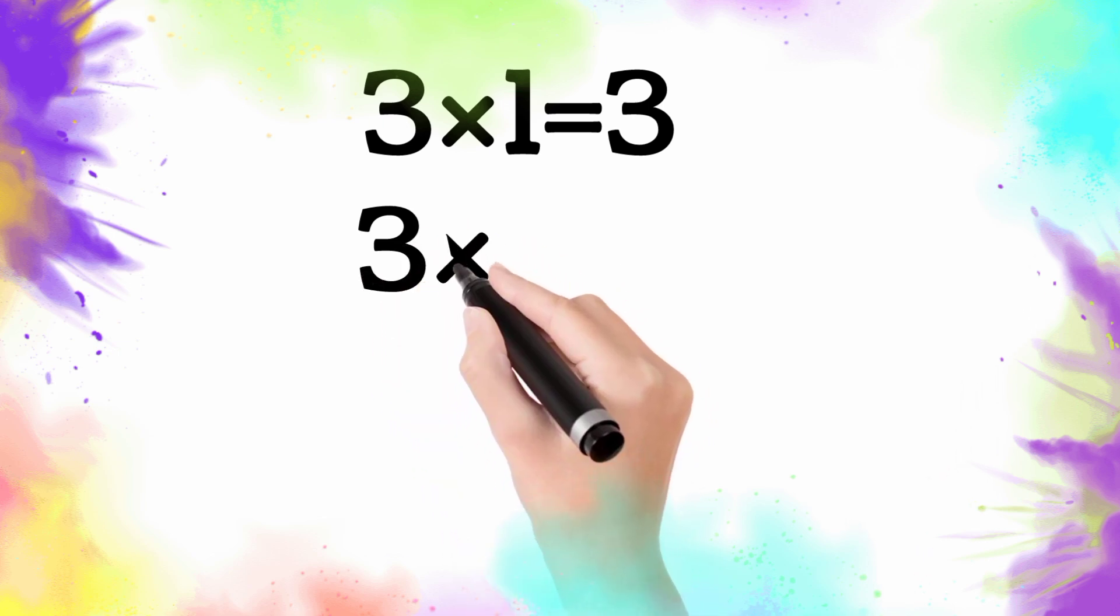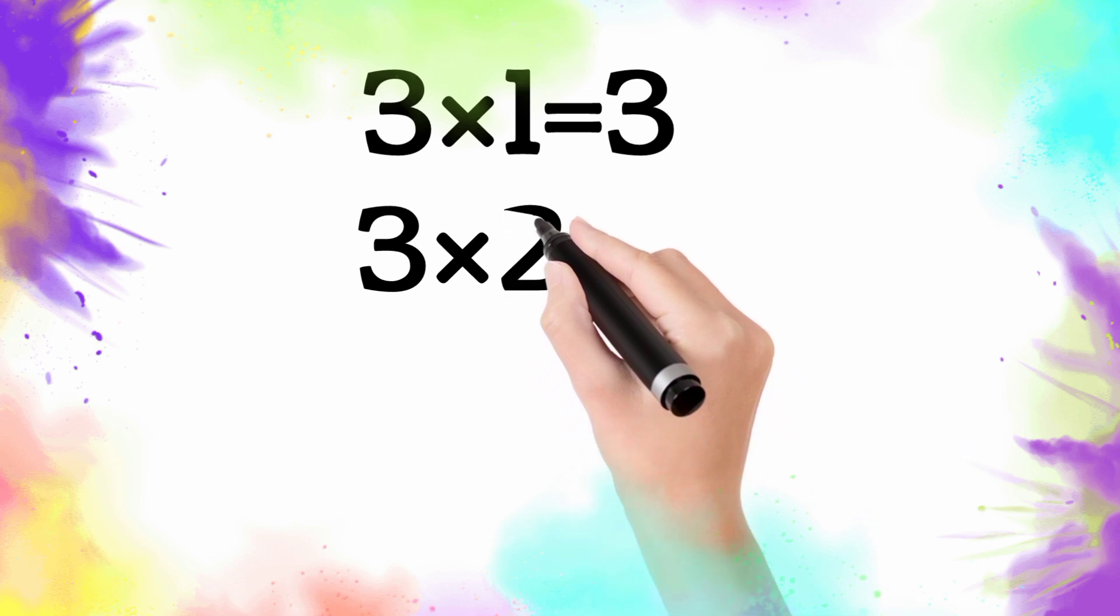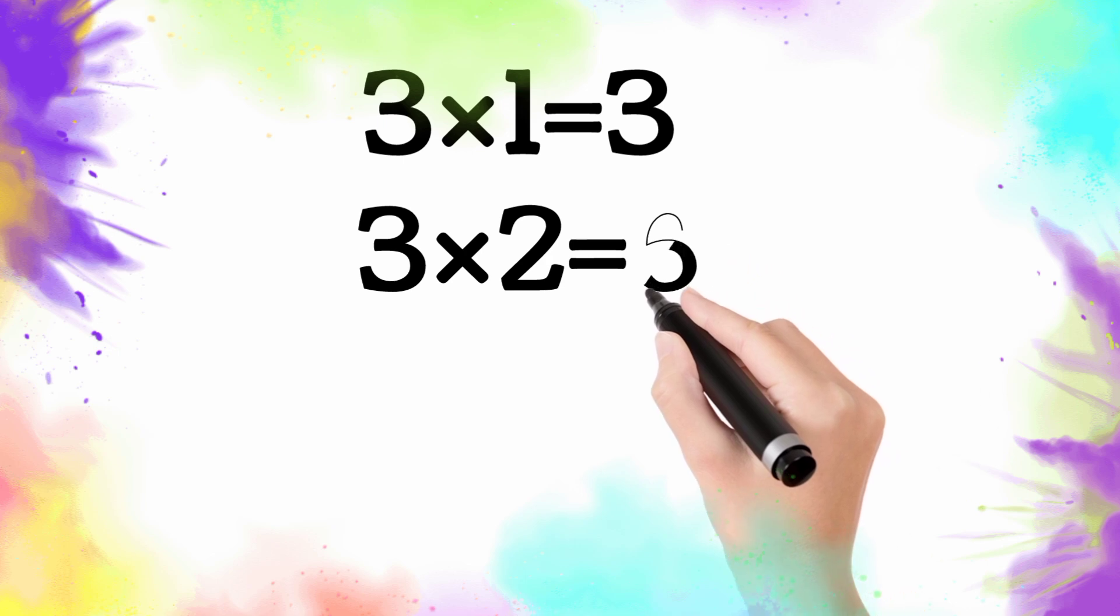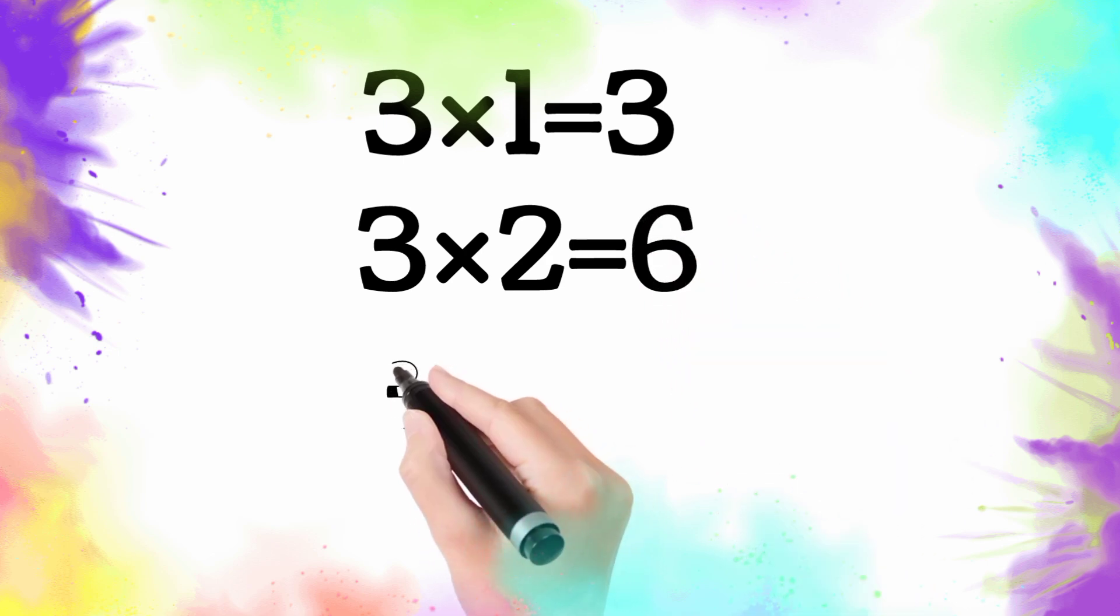Multiply by two is equal six. So three two, the six.